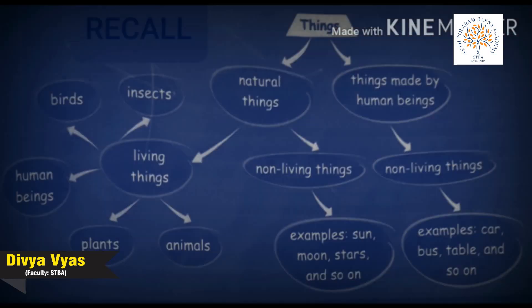Now it's time to recall everything. Things are divided into natural things and things made by human beings. Natural things are of two kinds: living things and non-living things. Living things include insects, birds, human beings, plants, and animals. Non-living things include the sun, moon, stars, and so on. Things made by human beings — like cars, buses, and tables — are also non-living things.